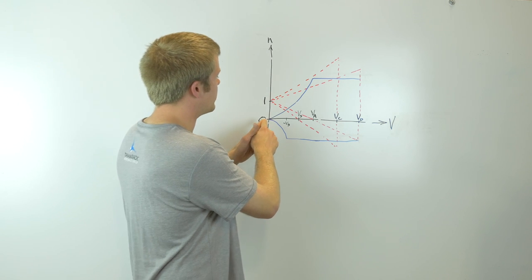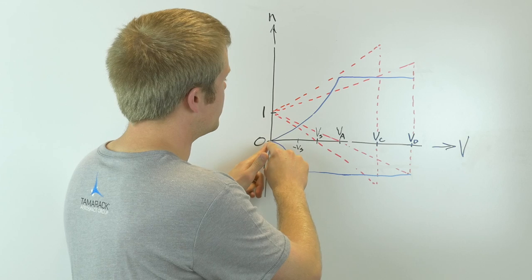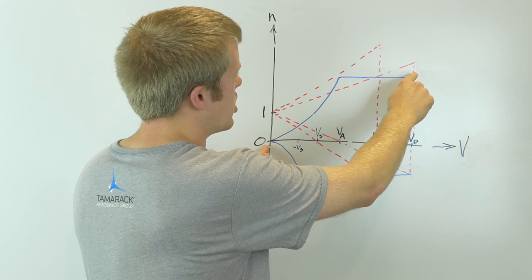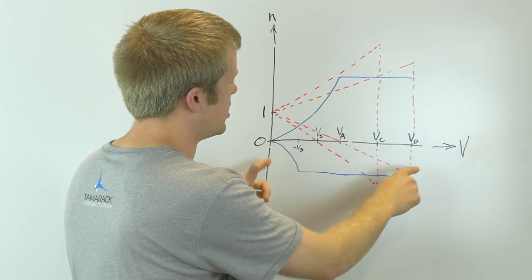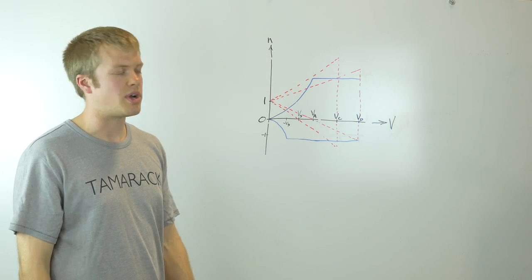The maneuvering envelope is determined by starting at 0 G's and following the stall line of the airplane up to the maximum maneuvering load factor and then drawing a constant line to VD. A similar trend occurs on the negative side except that it's a slightly different shape because planes aren't symmetric.